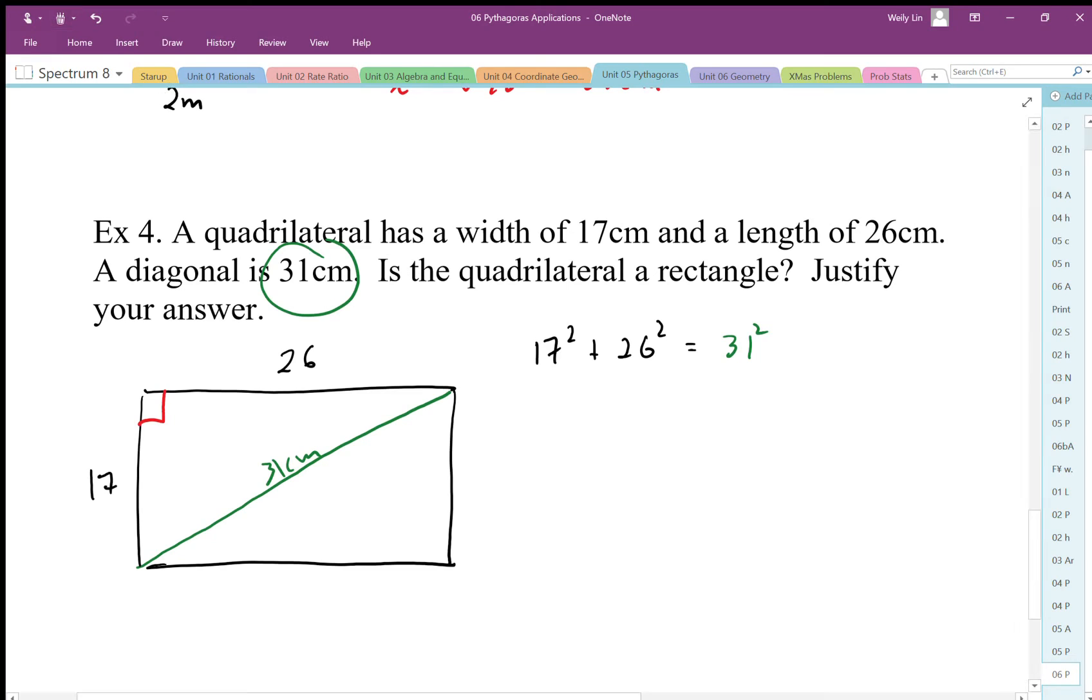We're gonna test it. So we're gonna work out 17 squared. That's 289 plus, and we'll work out 26 squared. I need a calculator for that. So 26 squared is 676, and 31 squared works out to be 961. So do these two add up to 961?